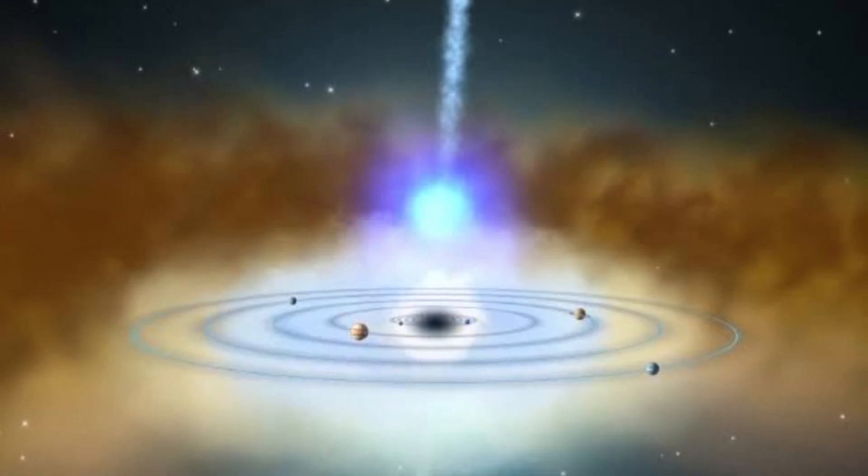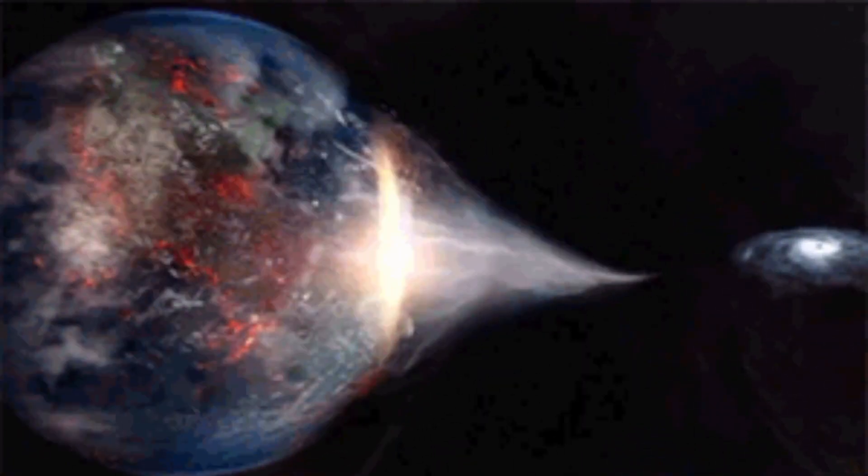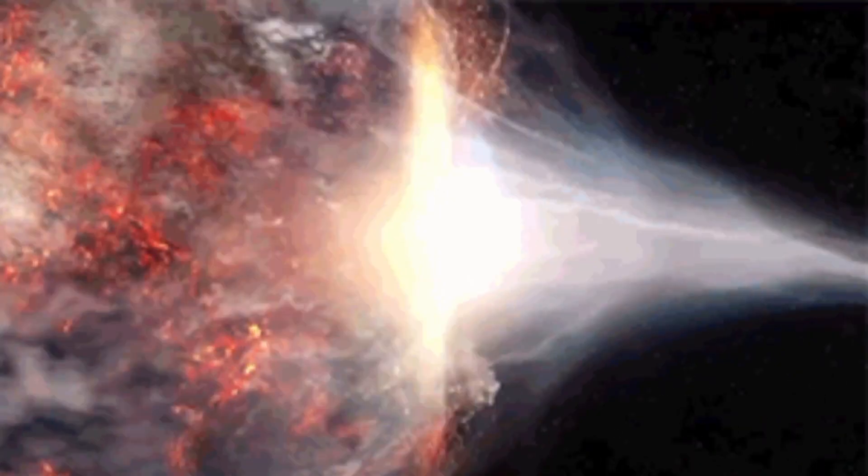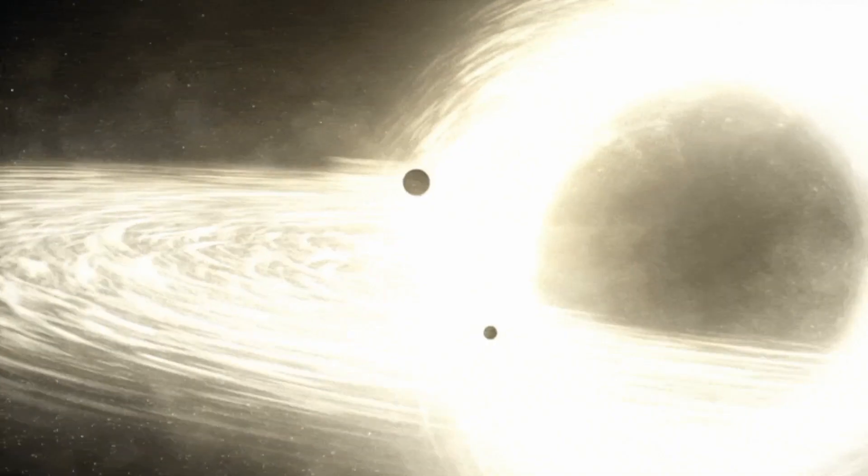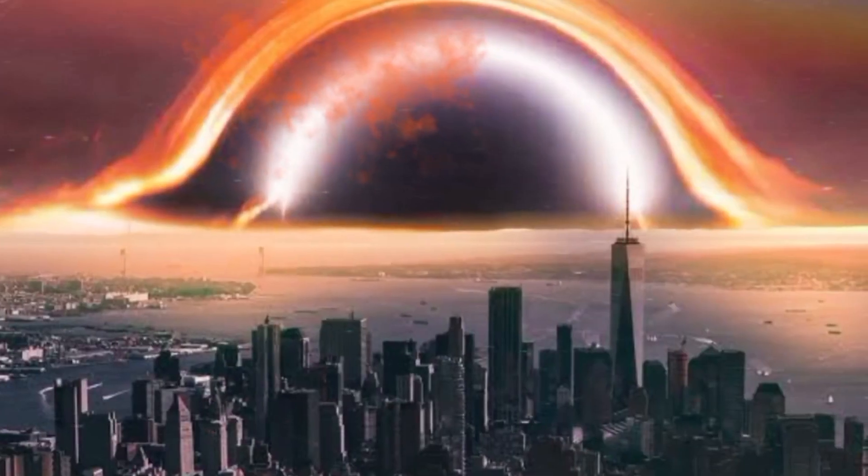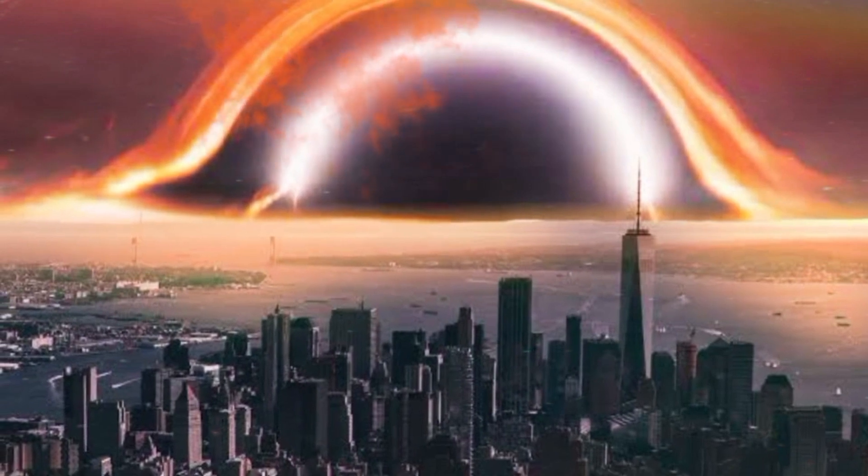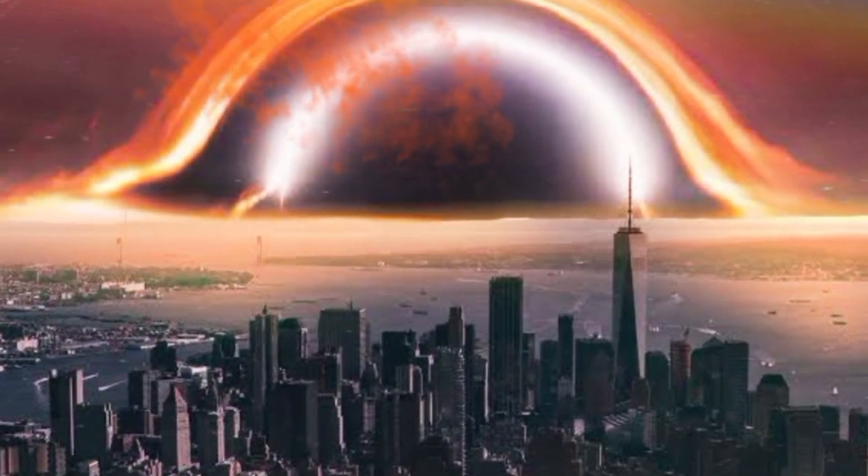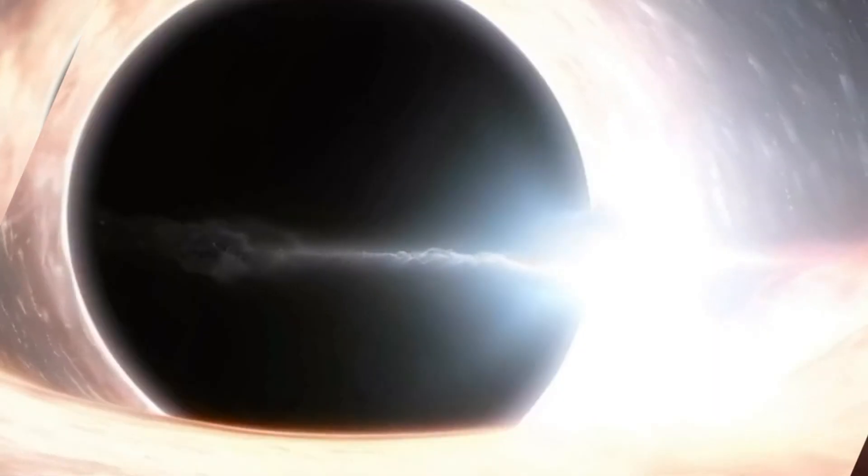But let's address the elephant in the room: could a black hole swallow our beloved Earth? The good news is no, black holes don't roam around space devouring planets. None are close enough to our solar system to pose a threat. Even if a black hole replaced our sun, Earth would continue to orbit it, business as usual. And speaking of our sun, don't worry, it won't become a black hole. It's simply not massive enough to pull off that cosmic transformation.